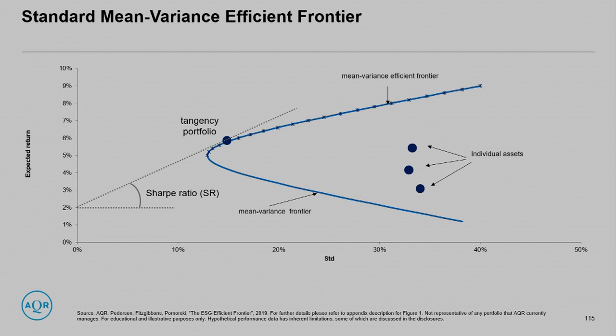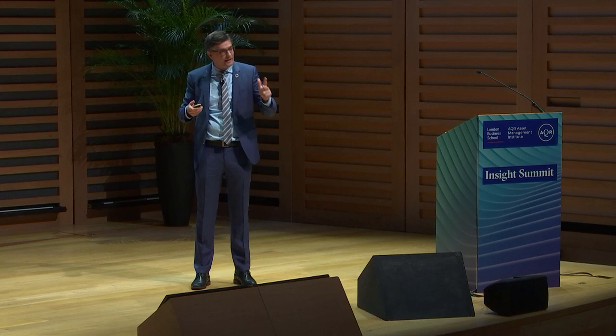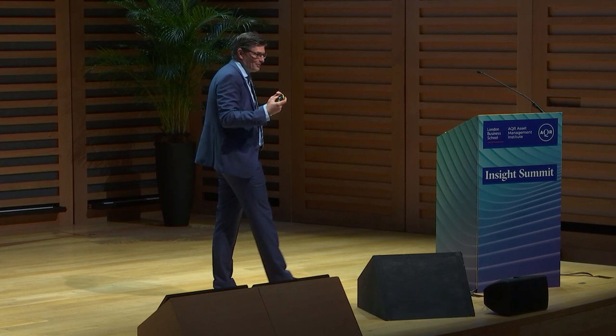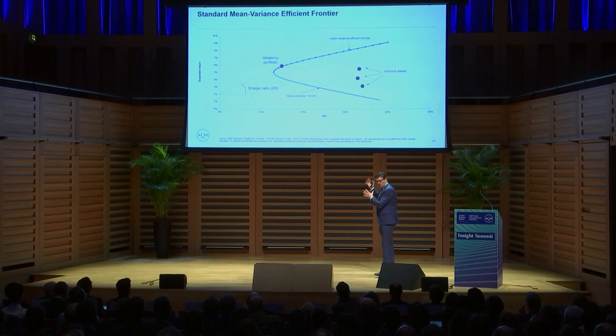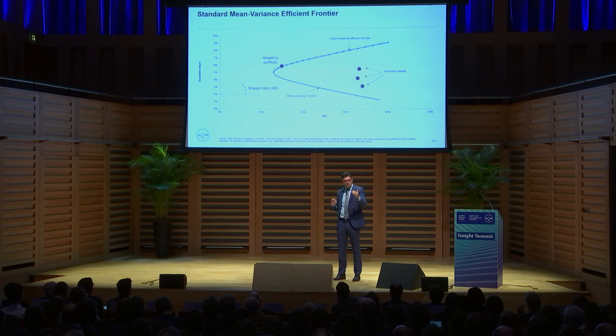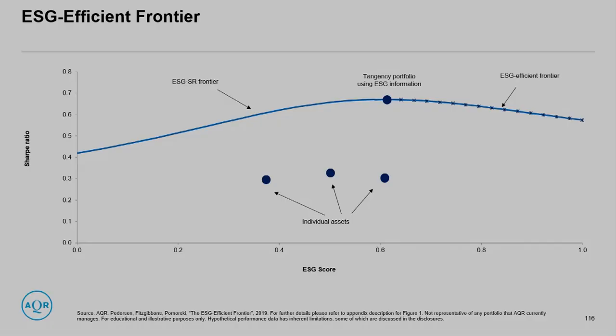Now suppose investors care about expected return, risk, and ESG. We could draw a three-dimensional plot, but people love two-dimensional plots. The key insight is that risk and expected return can be summarized by the Sharpe ratio — how much expected return you get per unit of risk. So we are left with two things: Sharpe ratio and ESG. We can plot on the x-axis the ESG score and on the y-axis the Sharpe ratio. ESG goes from zero — the worst offender — to one — the most sustainable firm. Individual stocks have some ESG score and some Sharpe ratio.